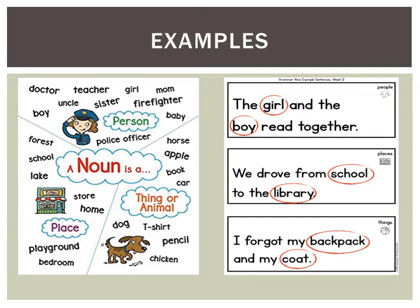The girl and the boy read together — girl and boy are nouns. We drove from school to the library — the words school and library are nouns. I forgot my backpack and my coat — the two nouns in this sentence are backpack and coat.